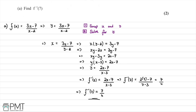This question was worth two marks. We receive the first mark for the correct method — finding the inverse and substituting in x = 7 — and the second mark for concluding with the correct answer.